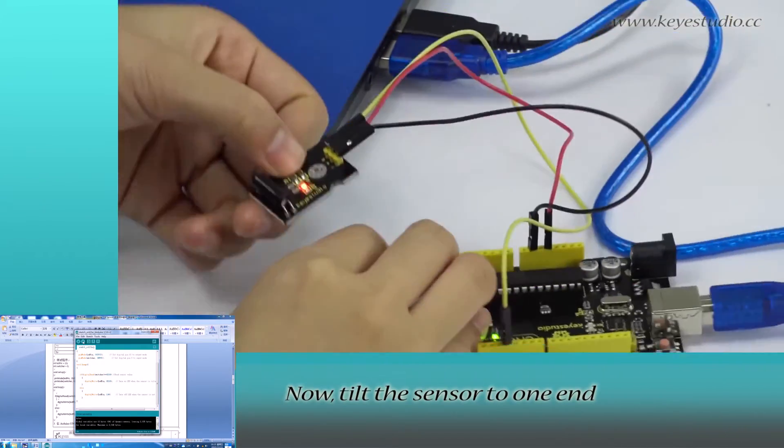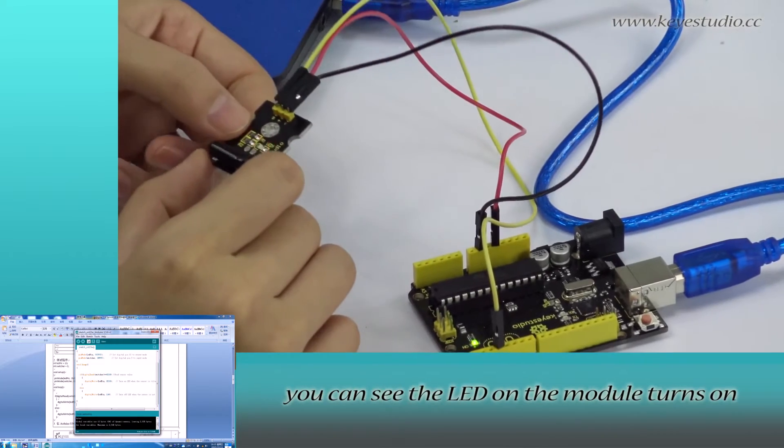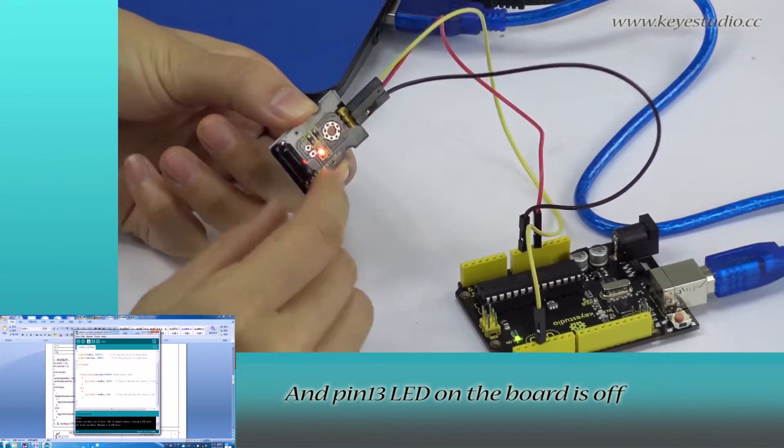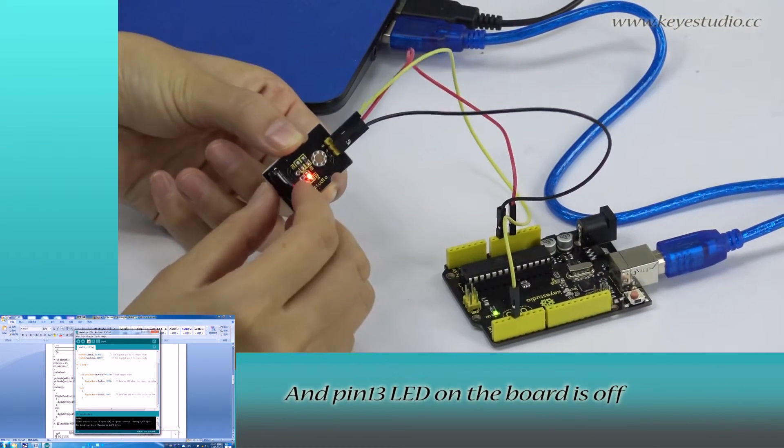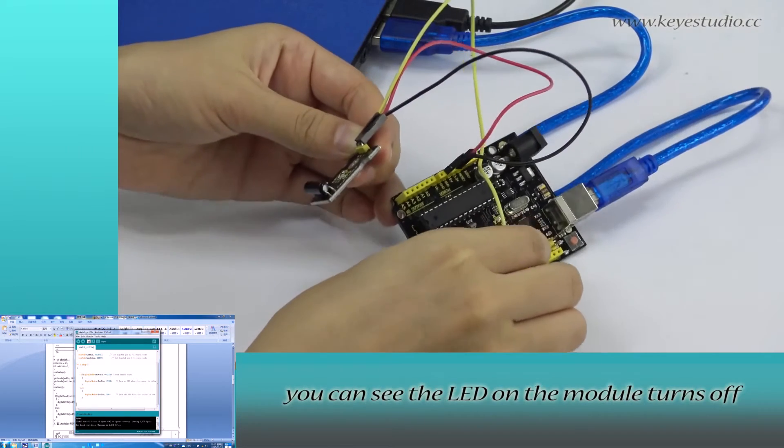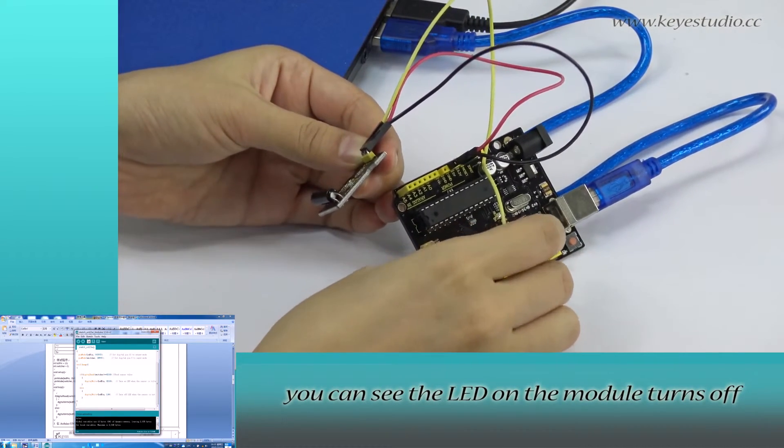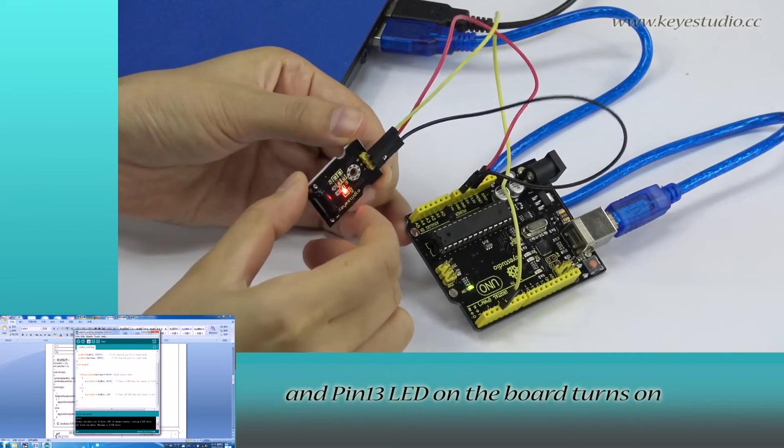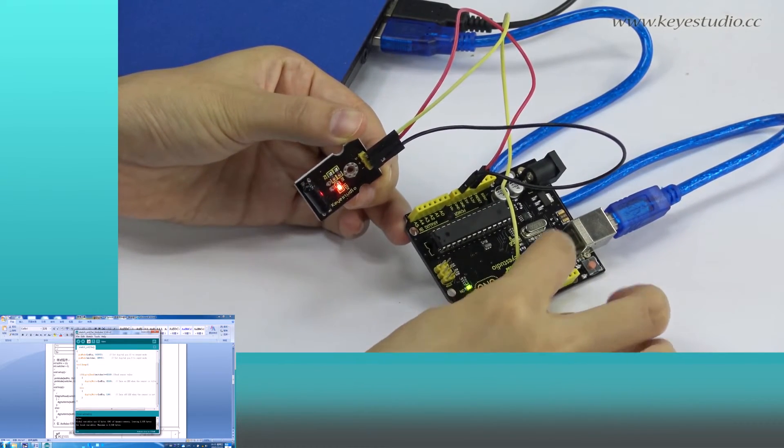Now, tilt the sensor to one end, you can see the LED on the module turns on, and pin 13 LED on the board is off. When you tilt the sensor to another end, you can see the LED on the module turns off, and pin 13 LED on the board turns on. Test is now complete.